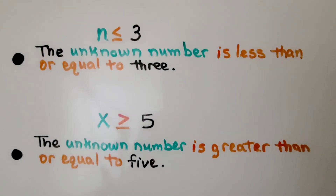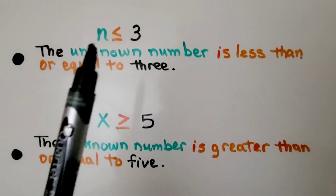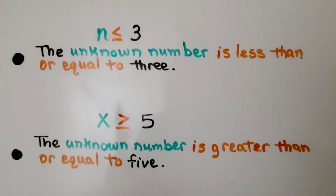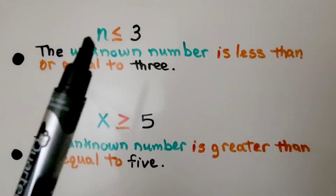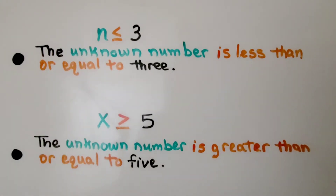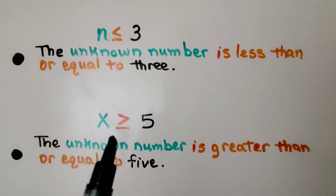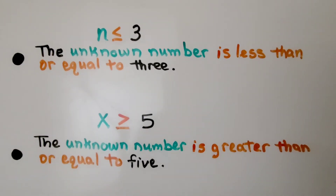When we see this inequality, it means the unknown number n is less than or equal to 3. When we see an inequality like this, it means the unknown number is greater than or equal to 5.